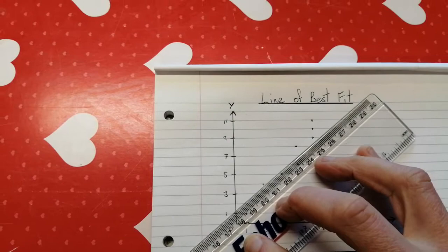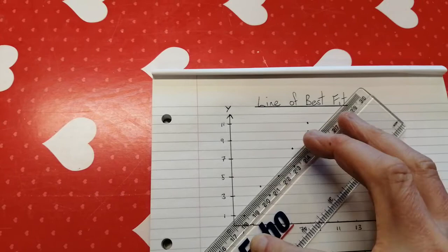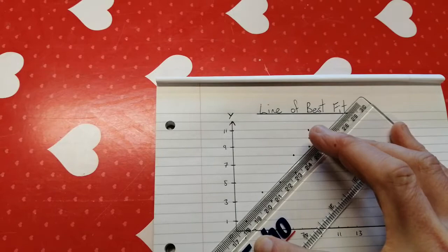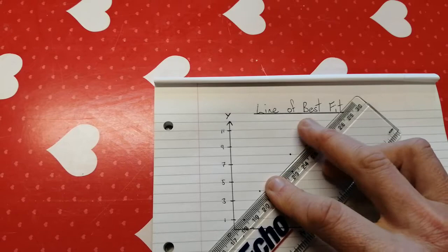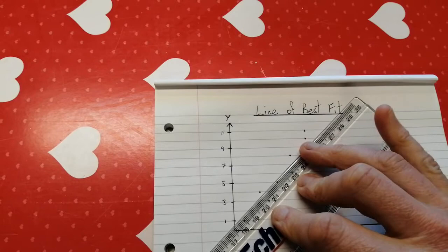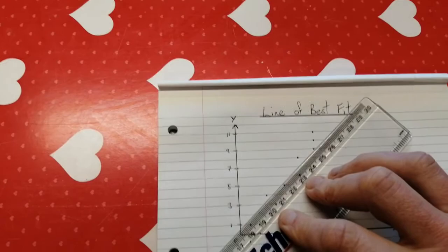But I could also have gone this way. I could have moved my ruler like this and I could have drawn my line through this dot up here. And then I would have had one, two, three, four dots on one side, four dots on the other side, and my line going through this final dot up here, and both would have been perfectly fine.